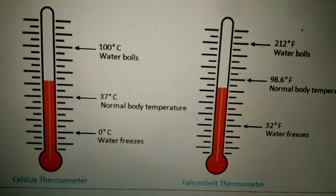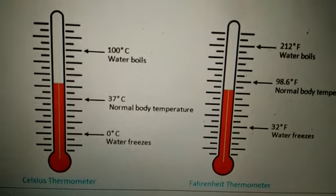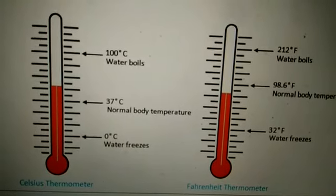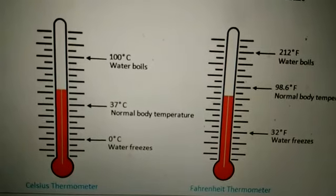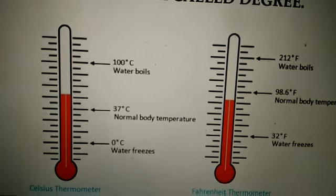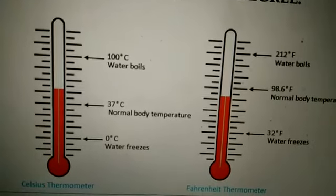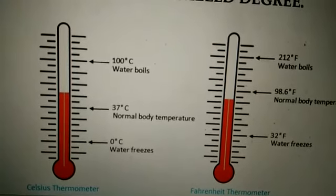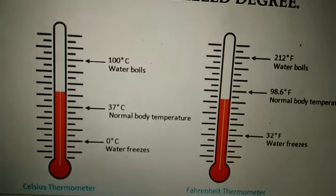Look at the two diagrams. In the left side diagram, it is the diagram of a Celsius thermometer in which a Celsius scale is used. Here, 100 degrees Celsius is the point at which water boils. Zero degree is the point at which water freezes, and 37 degrees Celsius is the normal body temperature.